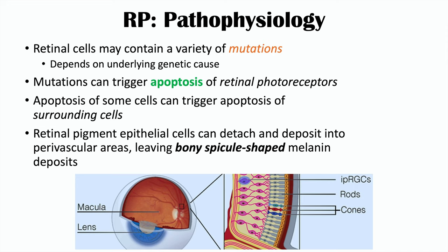It's worth noting that this condition is called retinitis pigmentosa — 'itis' meaning inflammation — however, there is actually minimal inflammation going on in the retina. It is more this programmed cell death of retinal photoreceptors that drives the pathophysiology, which is ultimately due to mutations in those retinal photoreceptor cells.